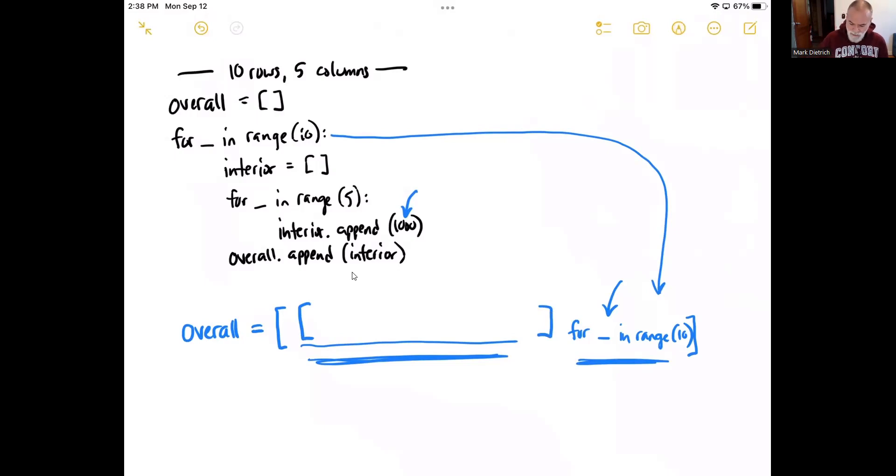And this is just going to be, normally we would put something and then for whatever the loop is going to be. So let's just leave this something out for right now. Here's something. And then let's just put this for loop header right here for blank in range five.